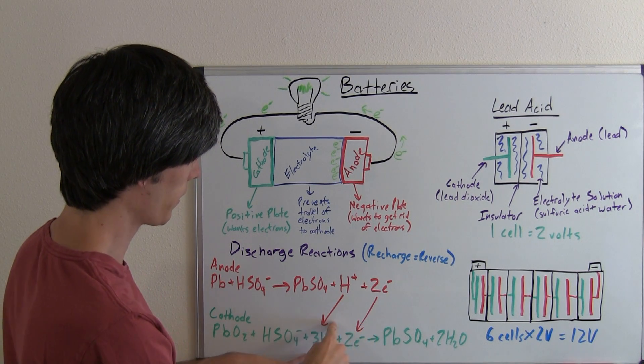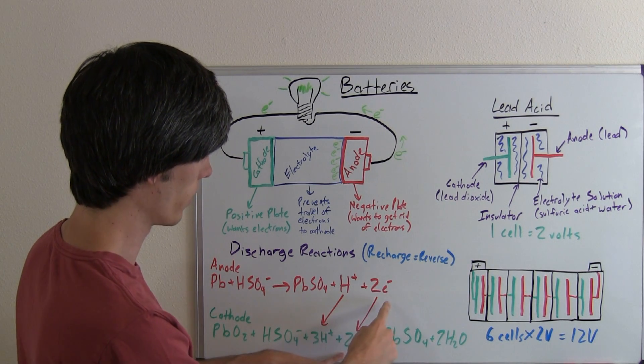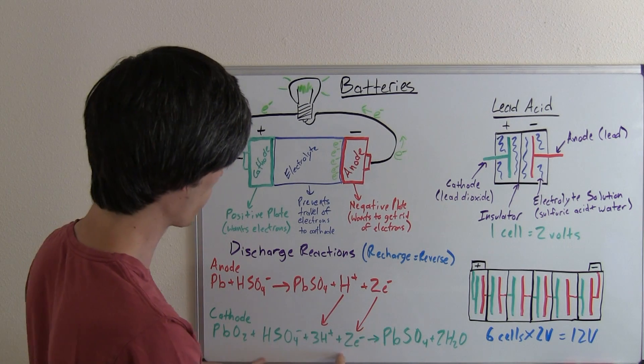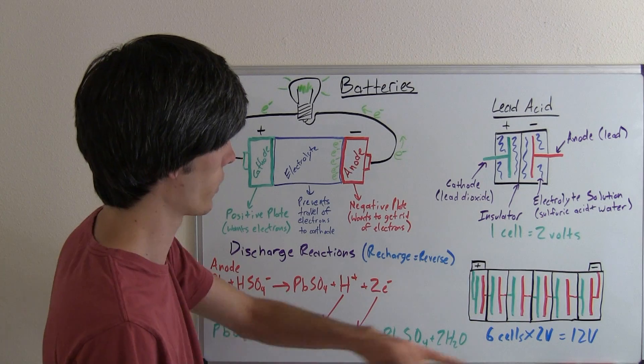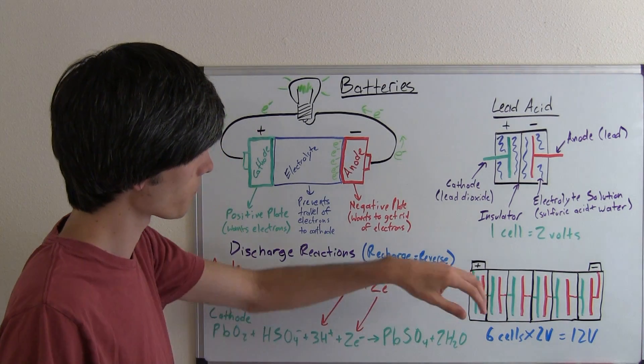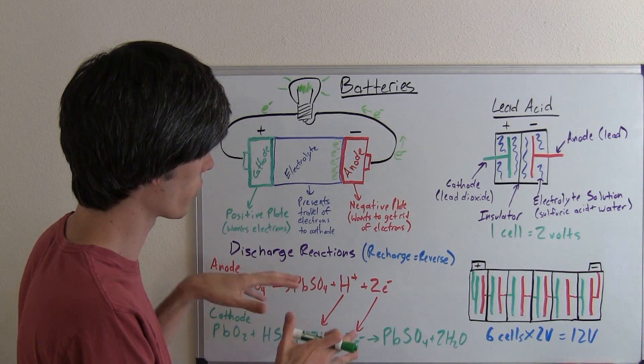it takes the hydrogen from that reaction that just occurred, and it takes the electrons from that reaction that just occurred, and it forms PbSO4 and two H2O's. That's the reaction that occurs to discharge.